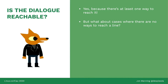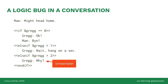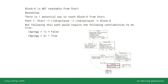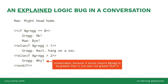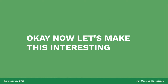We can use this to provide explanations for why we can't reach certain code. Here's a bit of Yarn code that contains a bug — that third option where Greg says a line can never run. The bug is a typo in 'else if Greg greater than 1' because it requires Greg to be greater than 2 but not greater than 1, which is a mathematical impossibility. We can ask Yarnspinner to prove it: there's only one way to get there and it's impossible. Z3 can produce an 'unsat core' — the minimal set of equations that are incompatible with each other — so we can say: it's unreachable, and here's why.